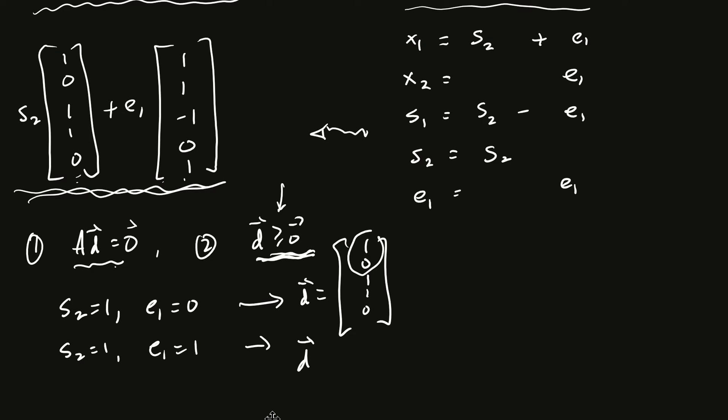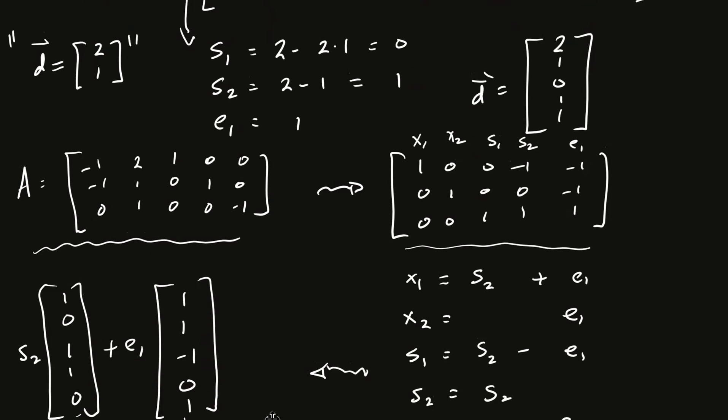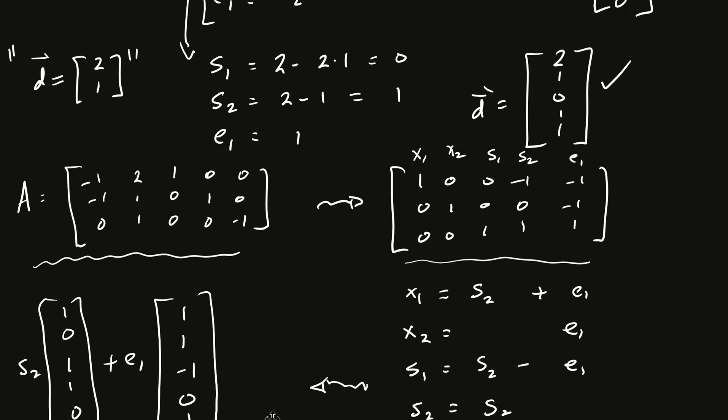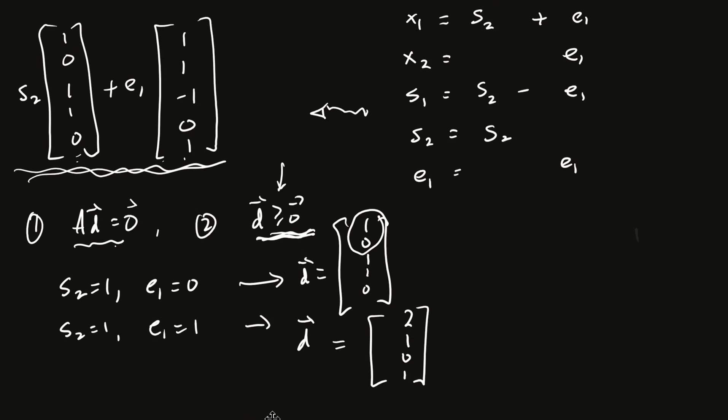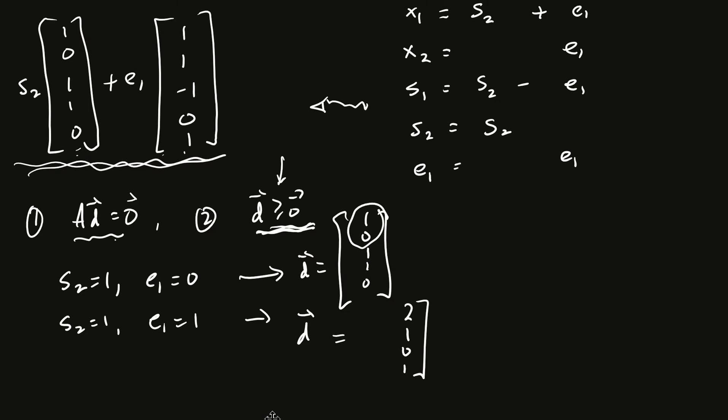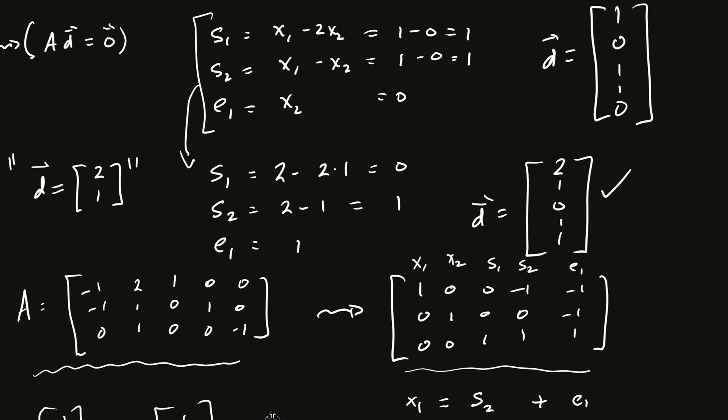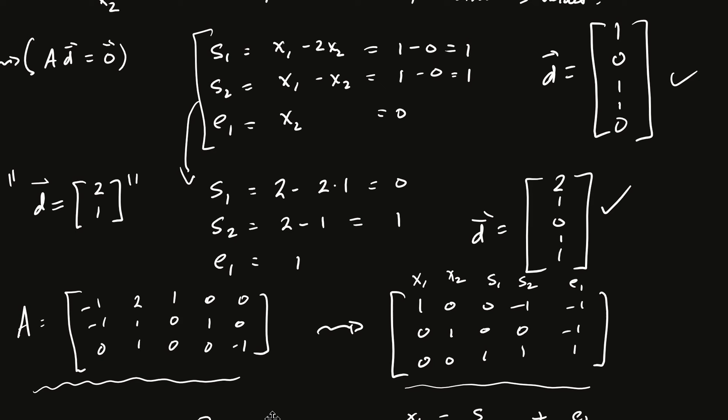And similarly, I could add some of these two vectors together. If I take S2 equal to 1 and E1 equal to 1, what happens? I get D. By the way, this is 1, 0, isn't it? The D in this case is 2, 1, 0. And I think that one was already found before too. Yes, it was, right there. 2, 1, 0, 1, 1. And then the 1, 0, 1, 1, 0 was also found. So you could take any linear combination as long as D is greater than 0.